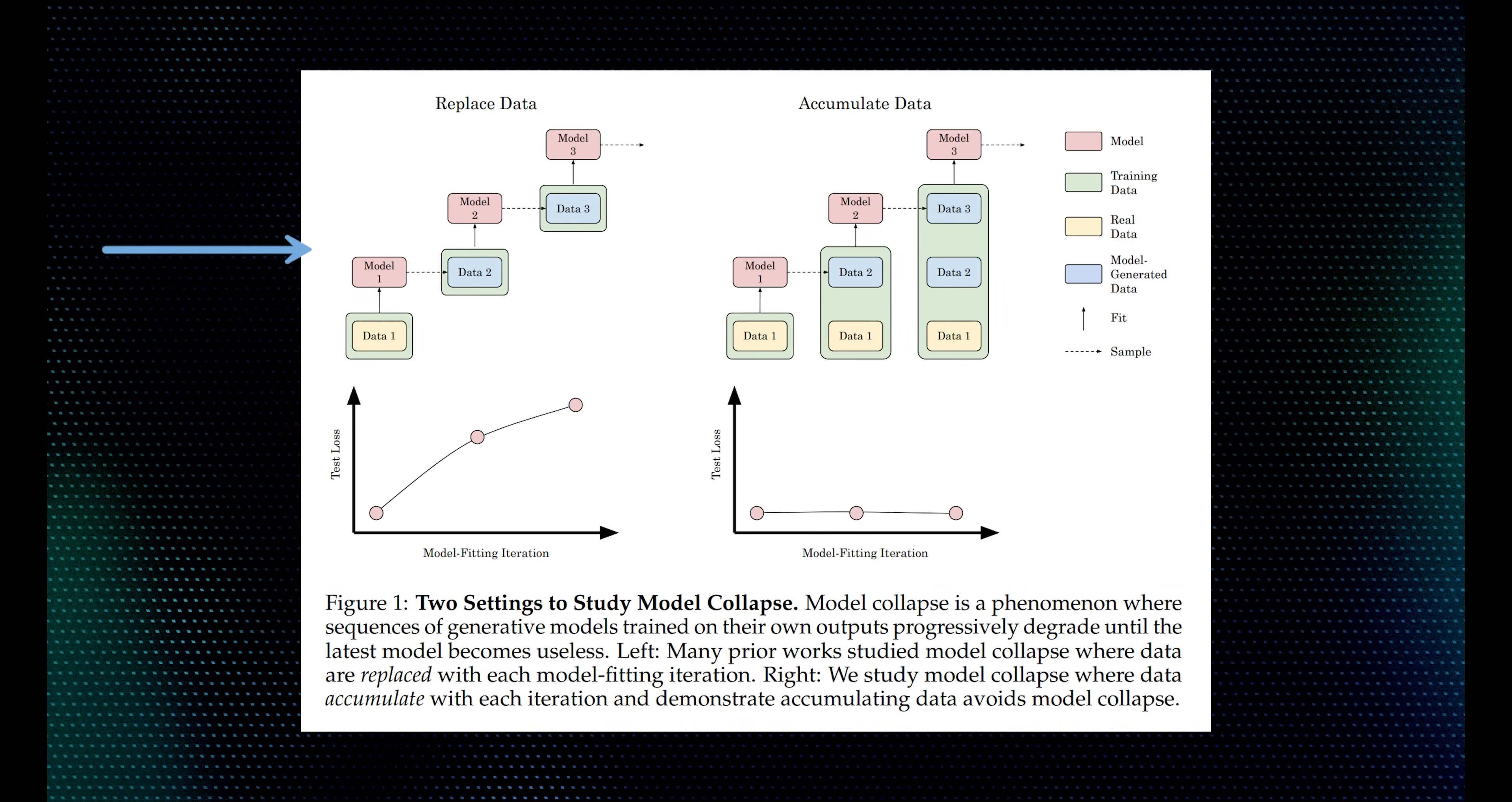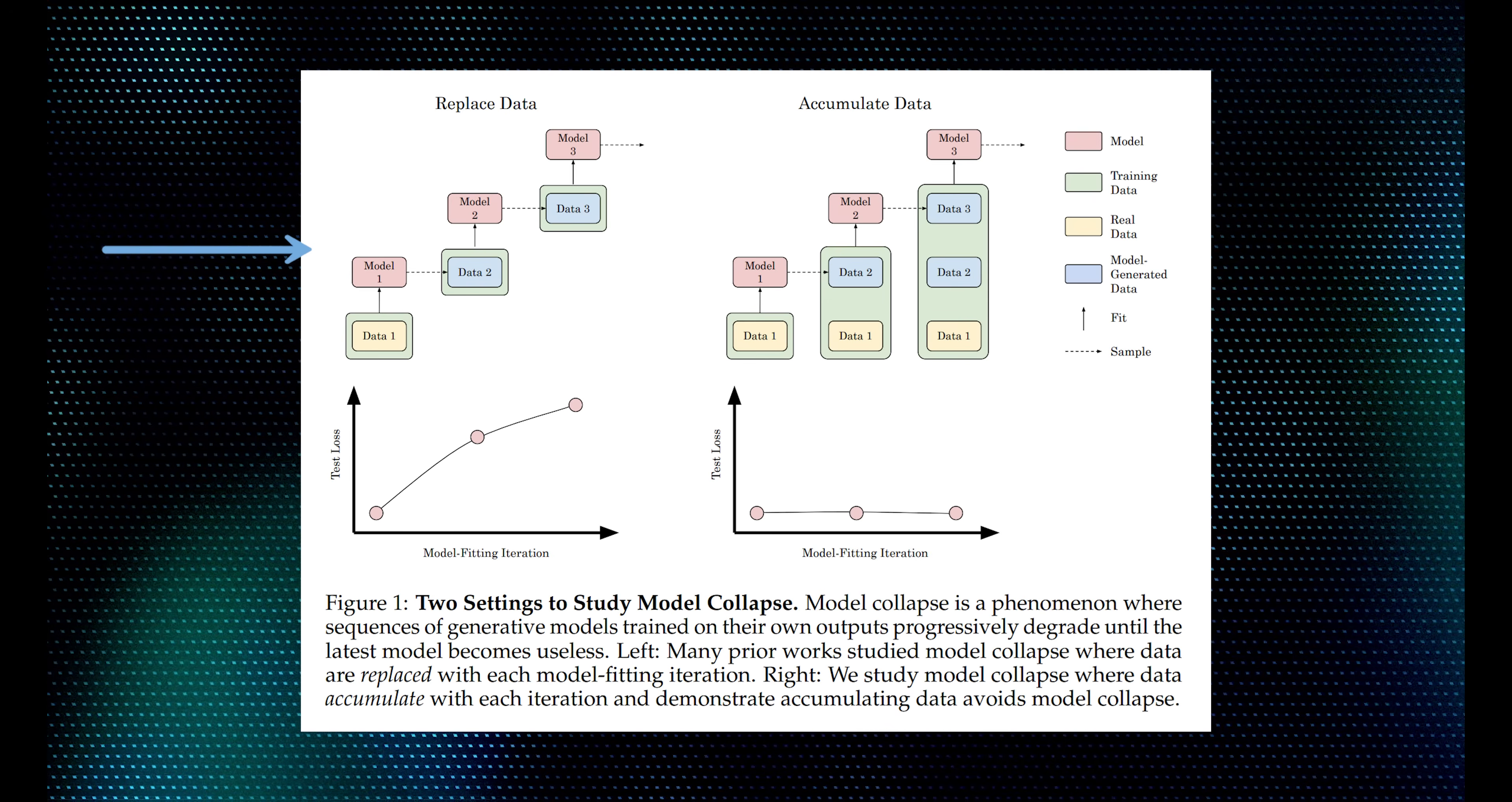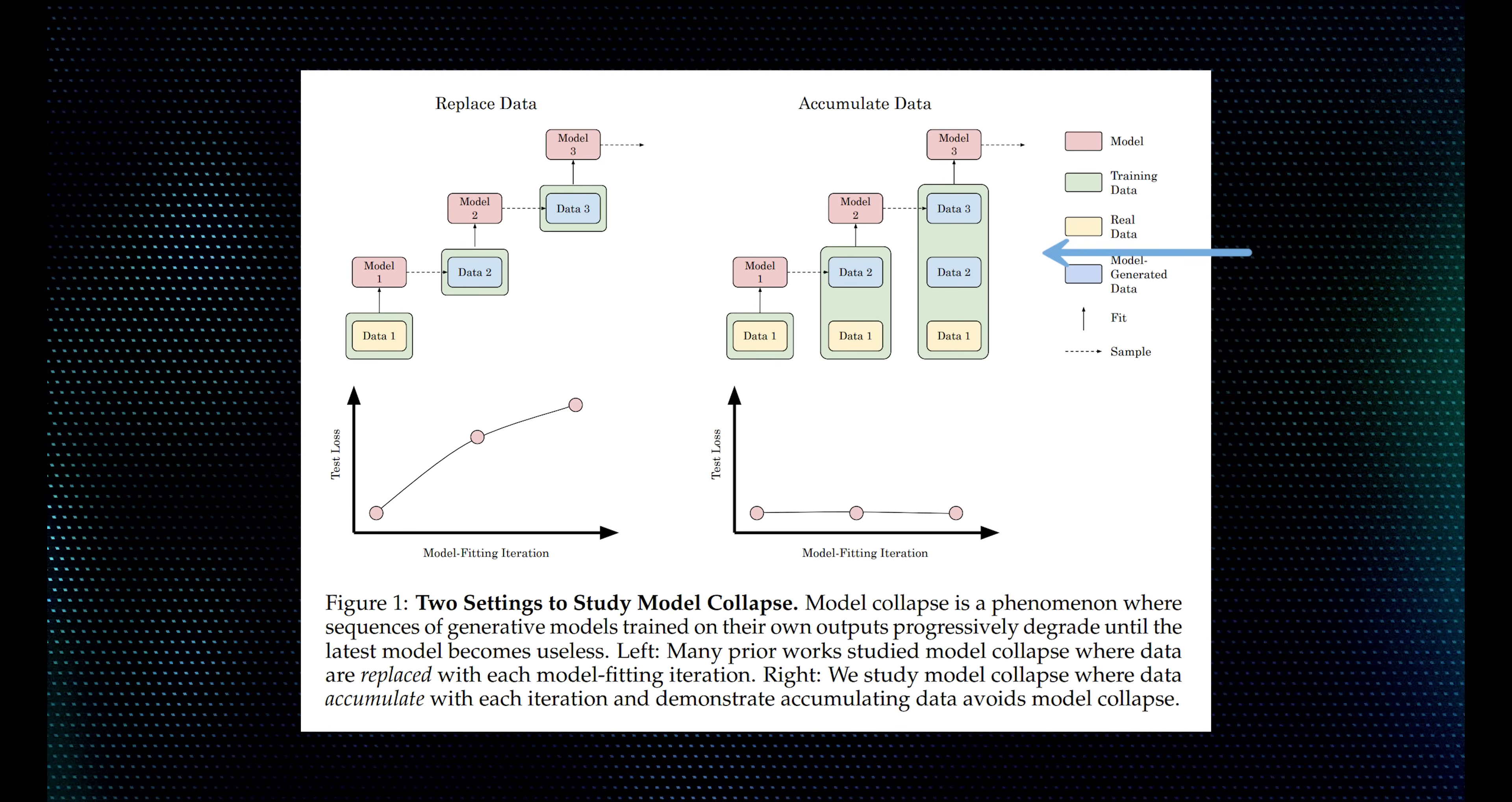If you throw away real data and use just synthetic data, indeed your test performance will degrade radically. But, if synthetic data appends enough old real data, divergent model collapse can be avoided. That's their main claim.